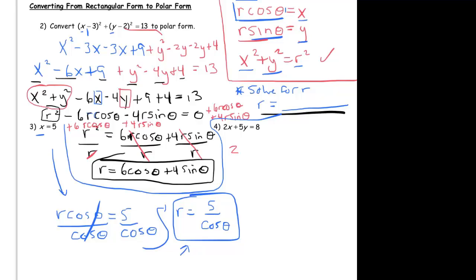So this is 2 r cosine theta instead of an x, plus 5, and rather than a y I'm going to plug in r sine theta, equal to 8.